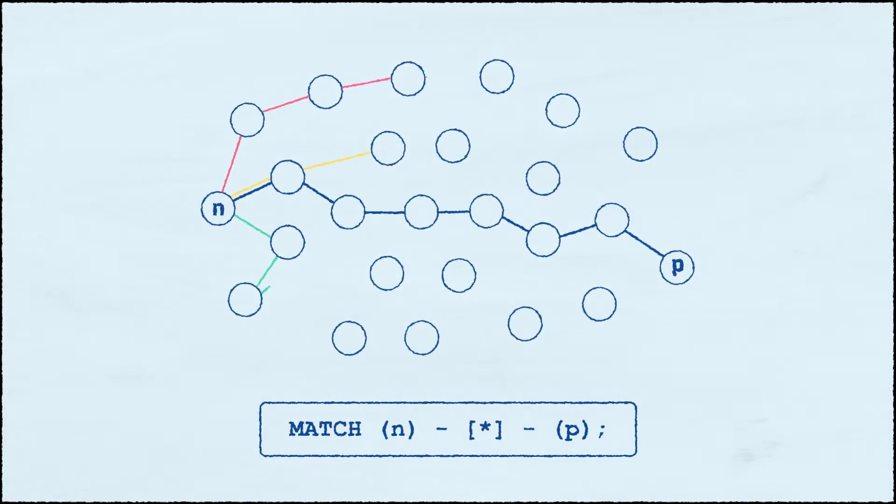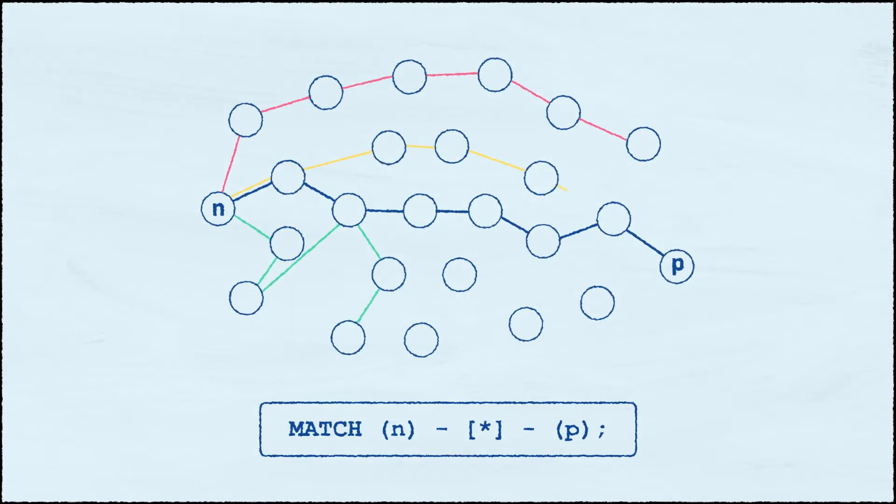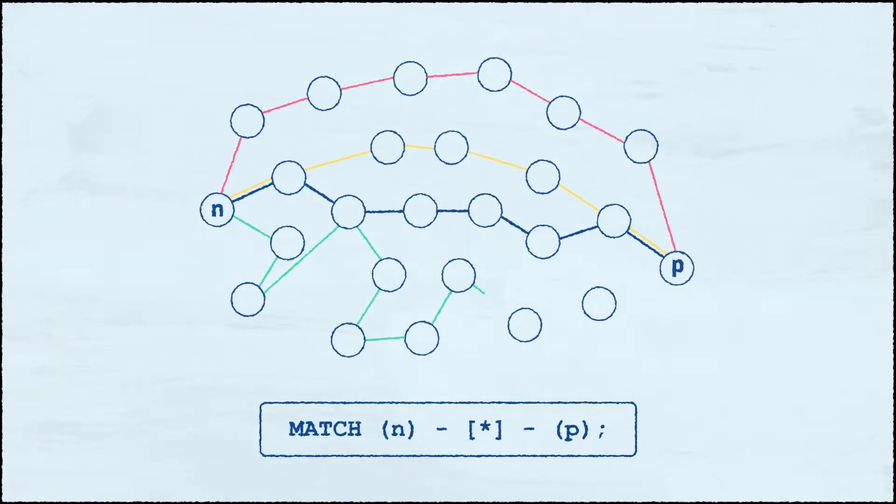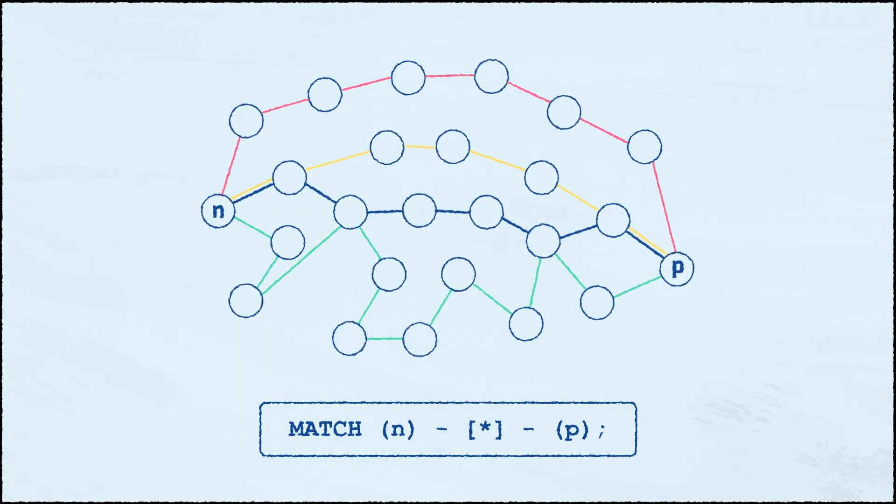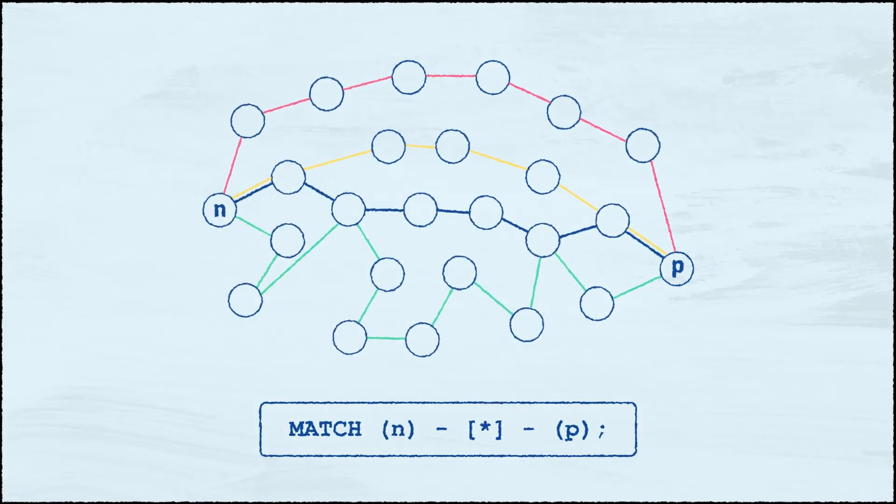But if we look at this query as the composition of multiple possible paths, we can start separating them out in our queries and get increasingly specific about the match we are after. We could limit the search space by relationship count, precise pattern and so on.